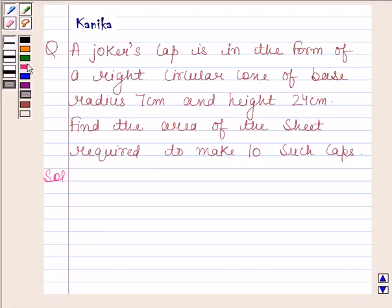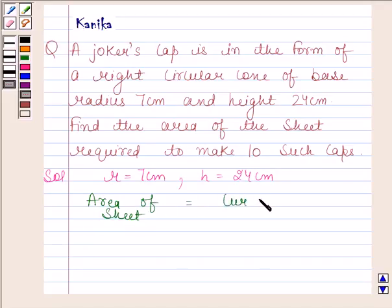Let us now begin with the solution. In the question we are given that radius of the cone, r, is equal to 7 cm, and height, h, is equal to 24 cm. Clearly, area of the sheet is equal to the surface area of cone. The surface area of cone is πrl.